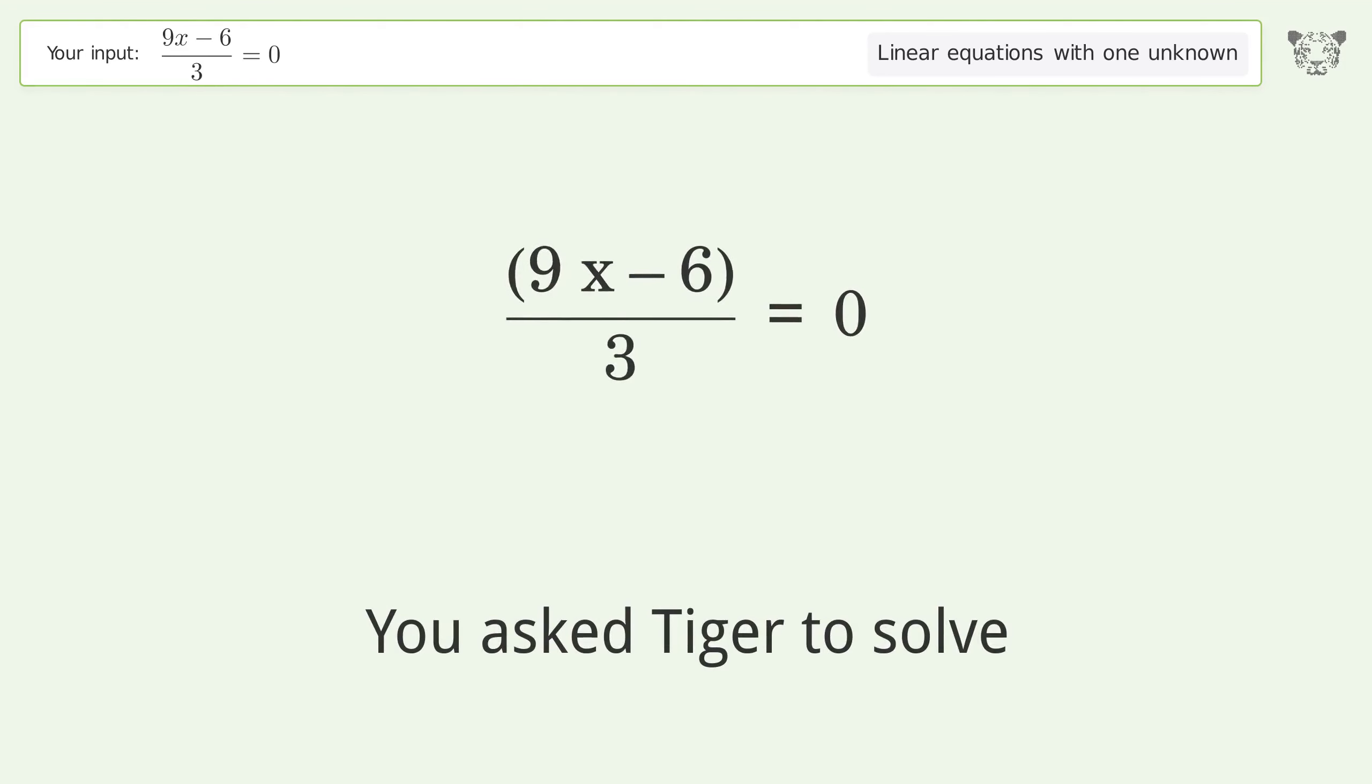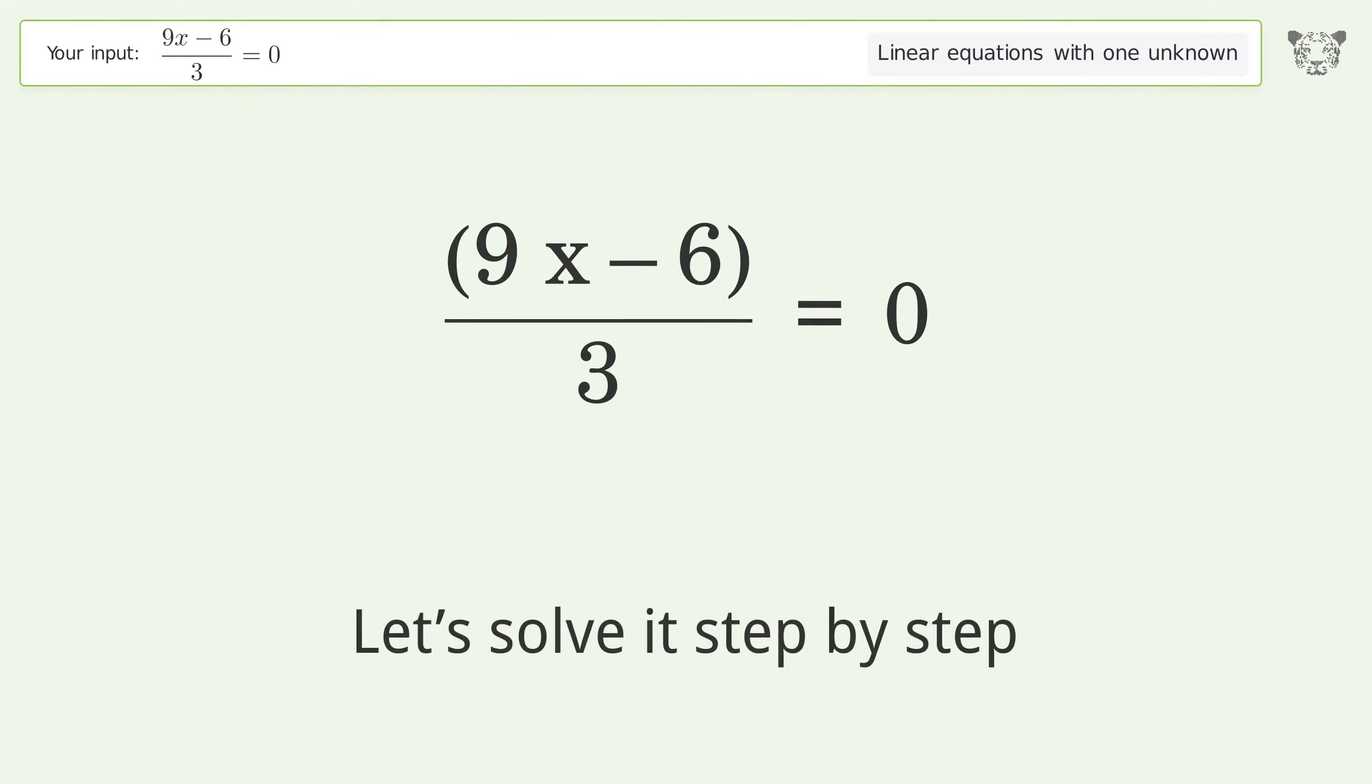You asked Tiger to solve this, which deals with linear equations with one unknown. The final result is x equals 2 over 3. Let's solve it step by step and simplify the expression.